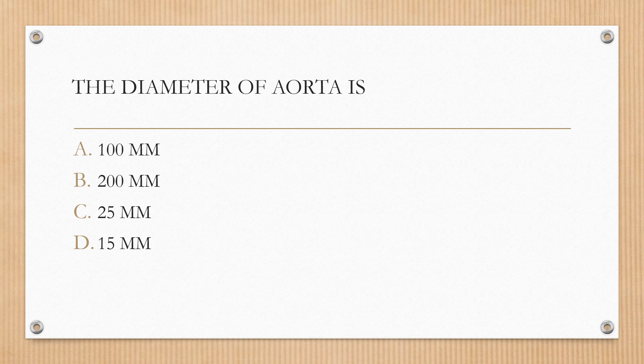First question. The diameter of the aorta is: option A 100 mm, option B 200 mm, option C 25 mm, option D 15 mm. The correct answer is option C, 25 mm.